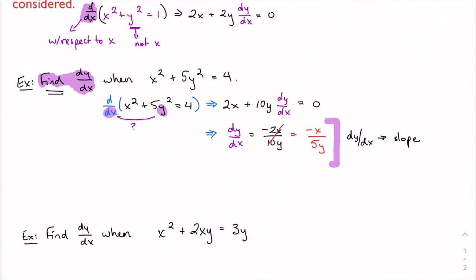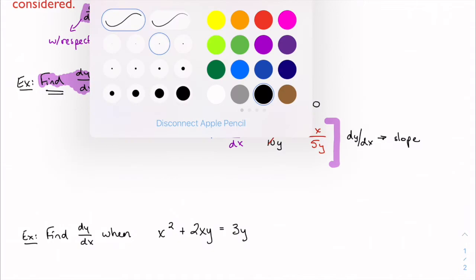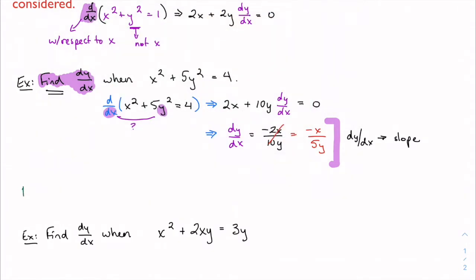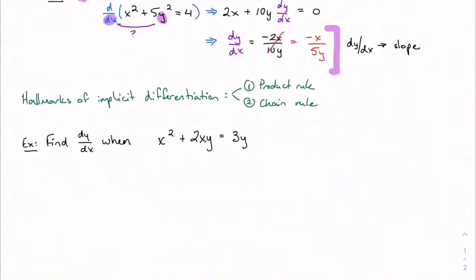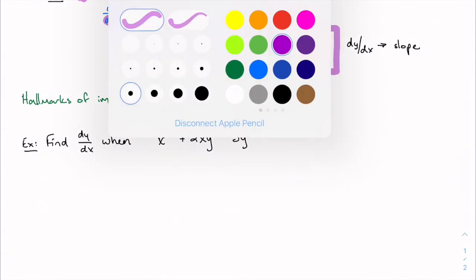All our normal tricks apply. A hallmark of implicit differentiation is that you'll tend to see a lot of product rule and often chain rule as well. The process is still the same: anytime I see something with a variable that doesn't match, I include that dy/dx term. Same process applies here — find dy/dx when x squared plus 2xy equals 3y.